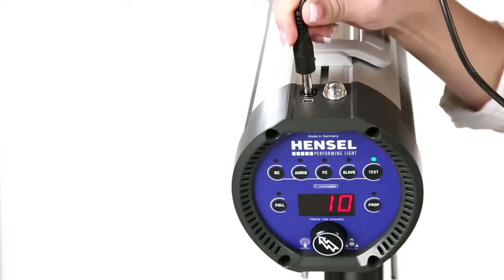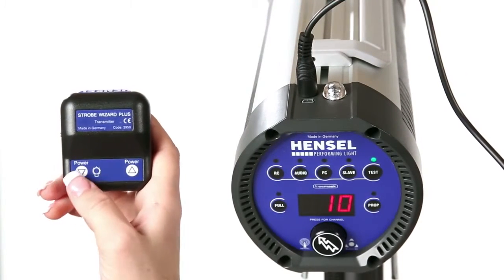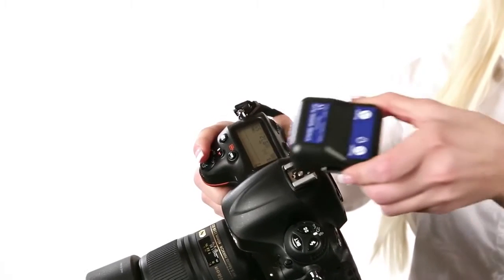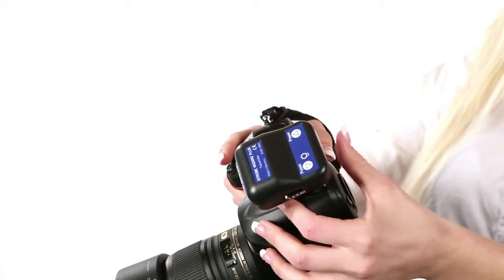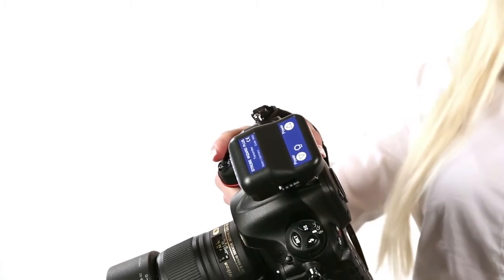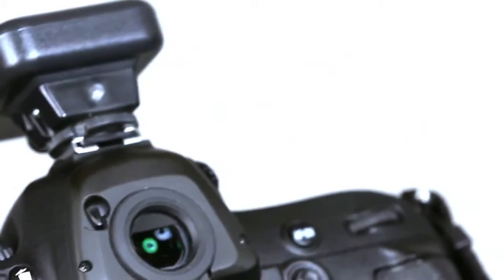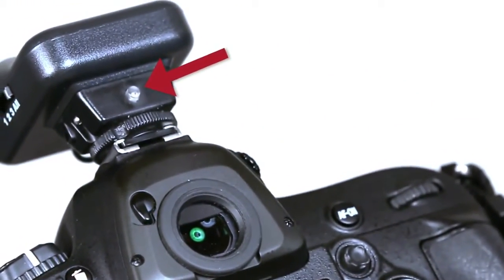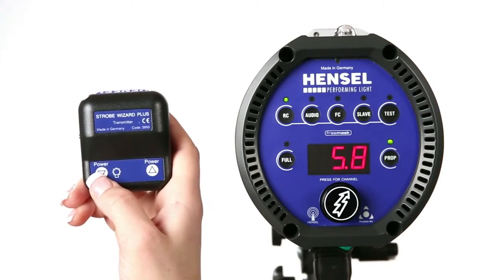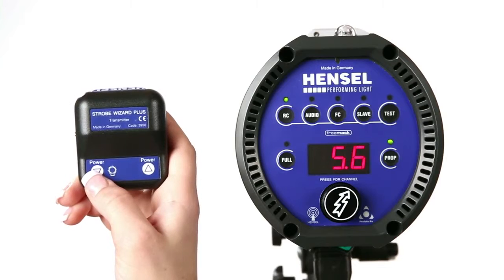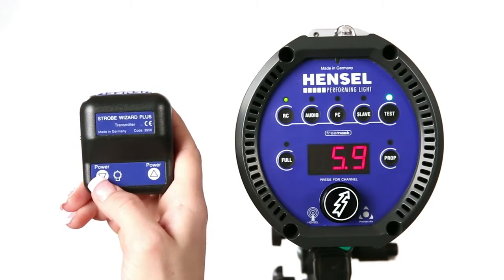The Expert D can be triggered with a sync cord or with an optional radio transmitter. The remote radio transmitter is easily connected to the hot shoe on your camera. The transparent test button on the transmitter triggers a flash on the units. With the radio transmitter, you can adjust the power as well as switch the modeling light to all possible modes.